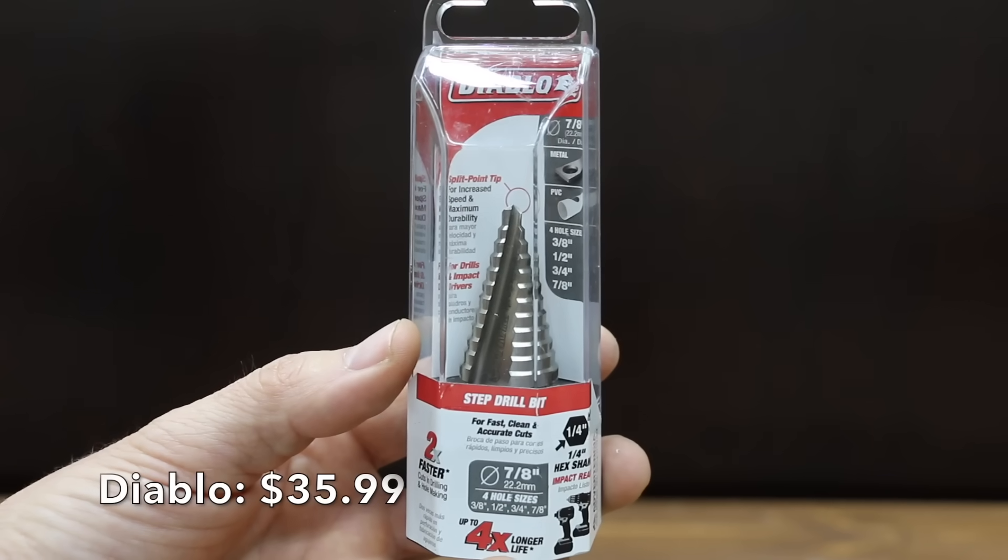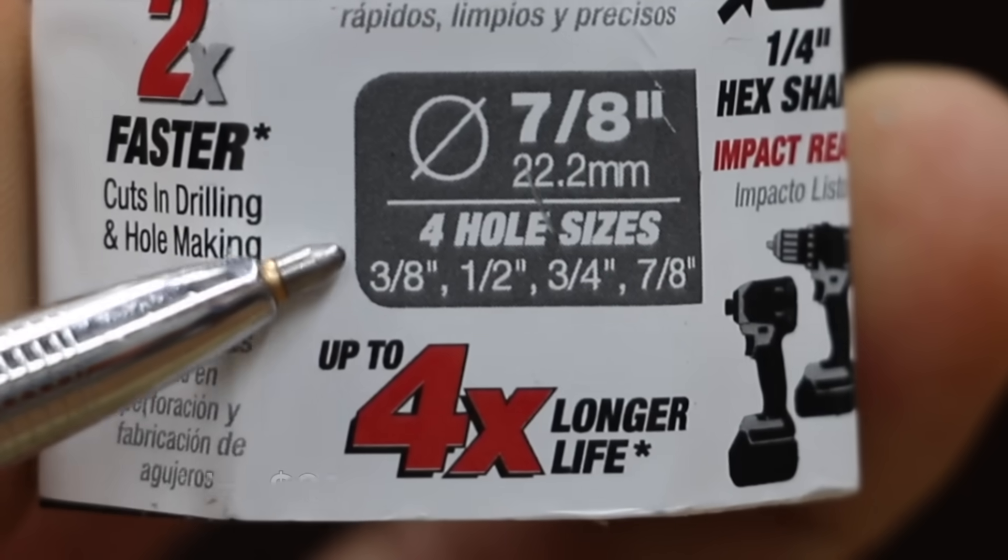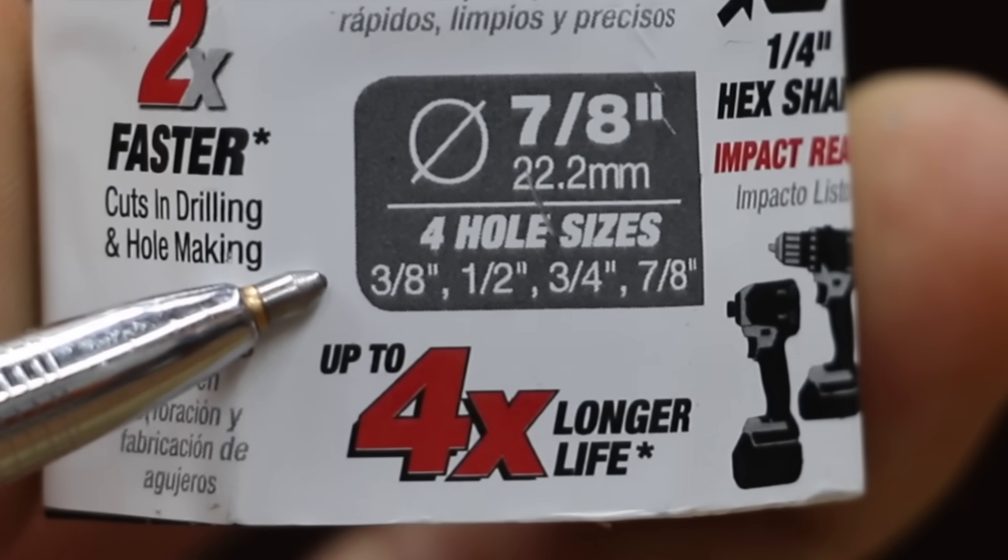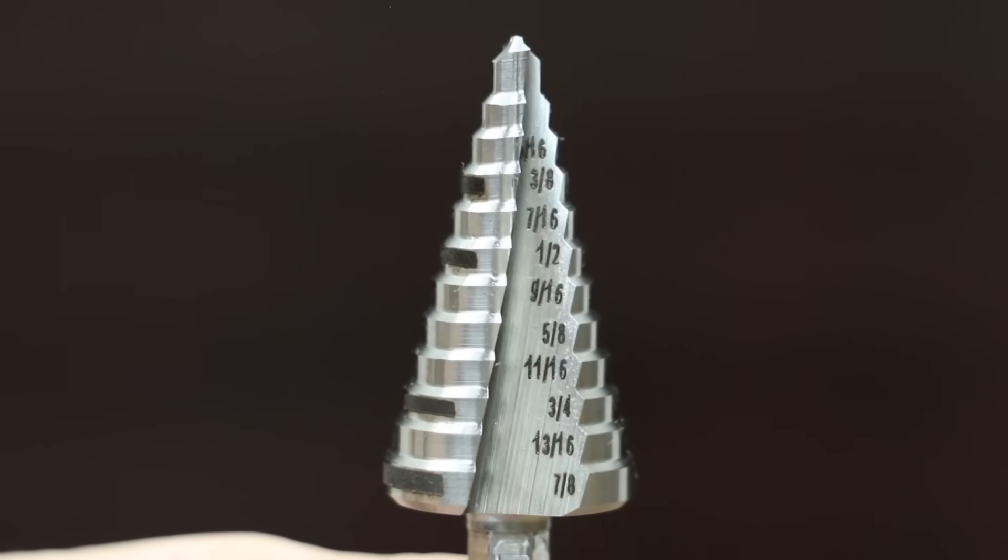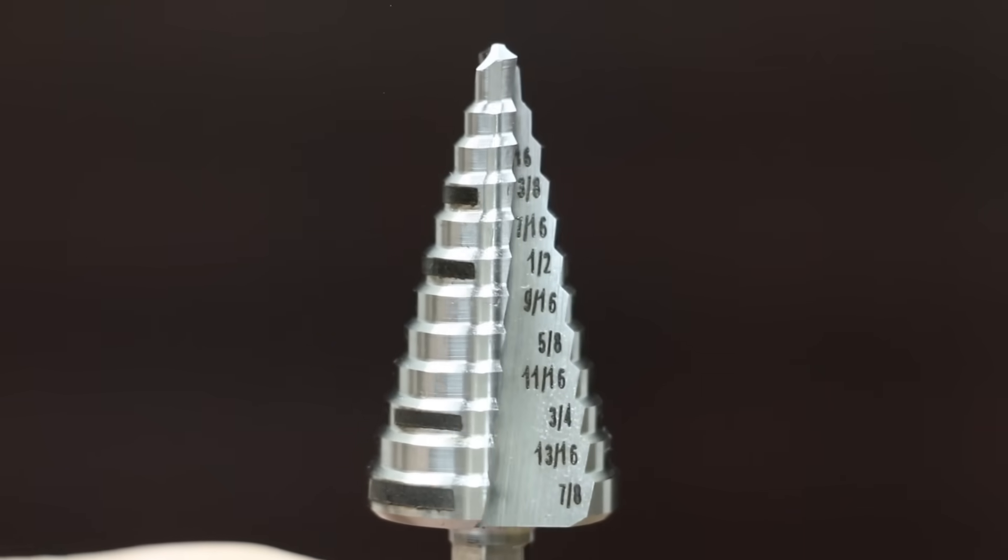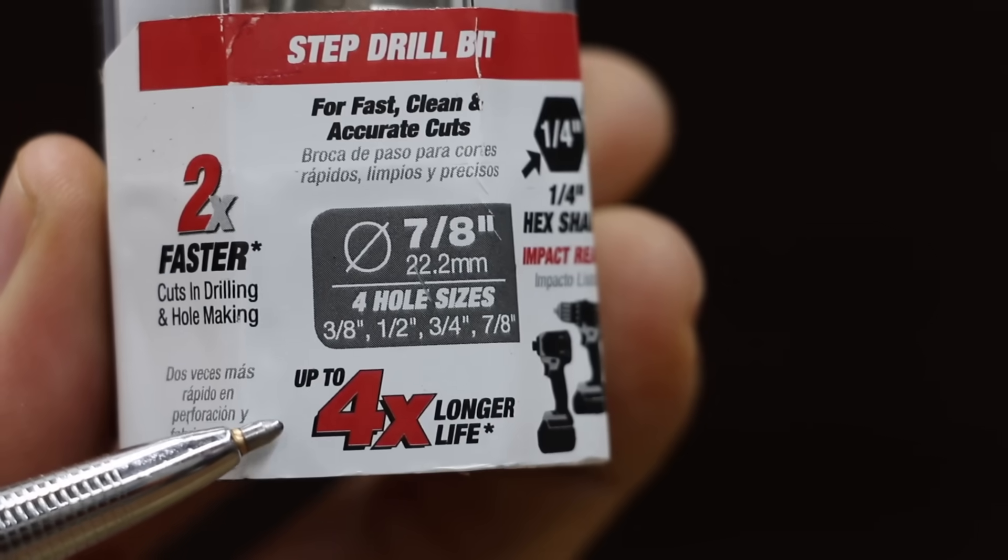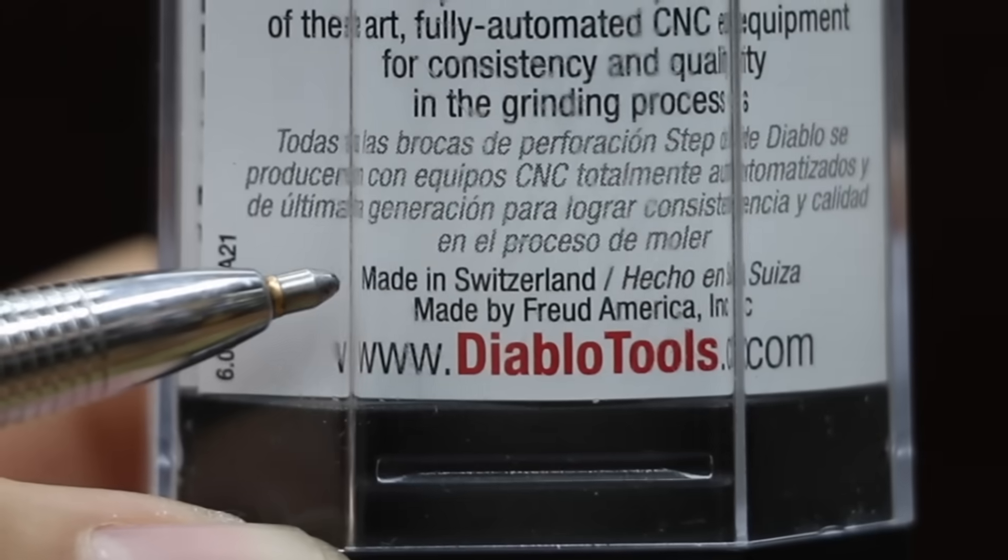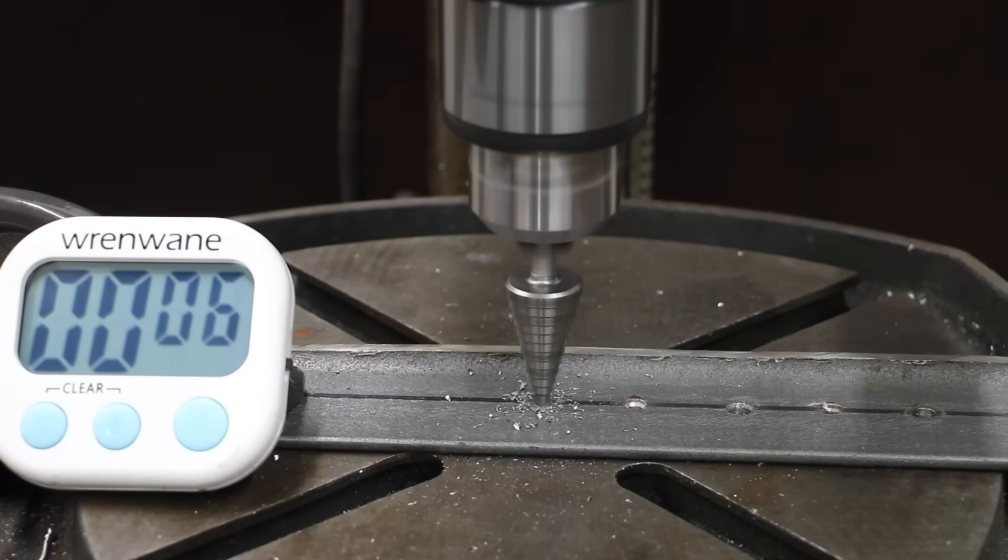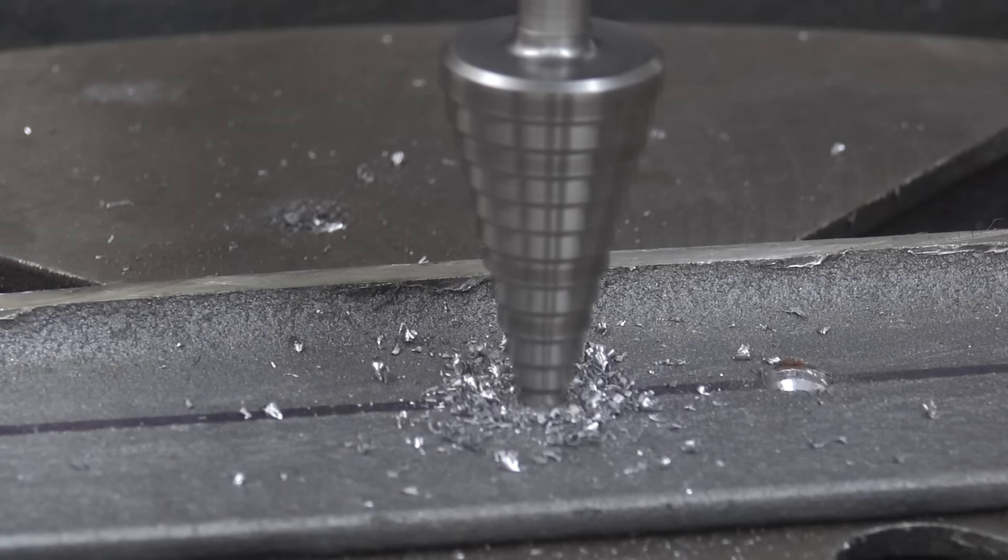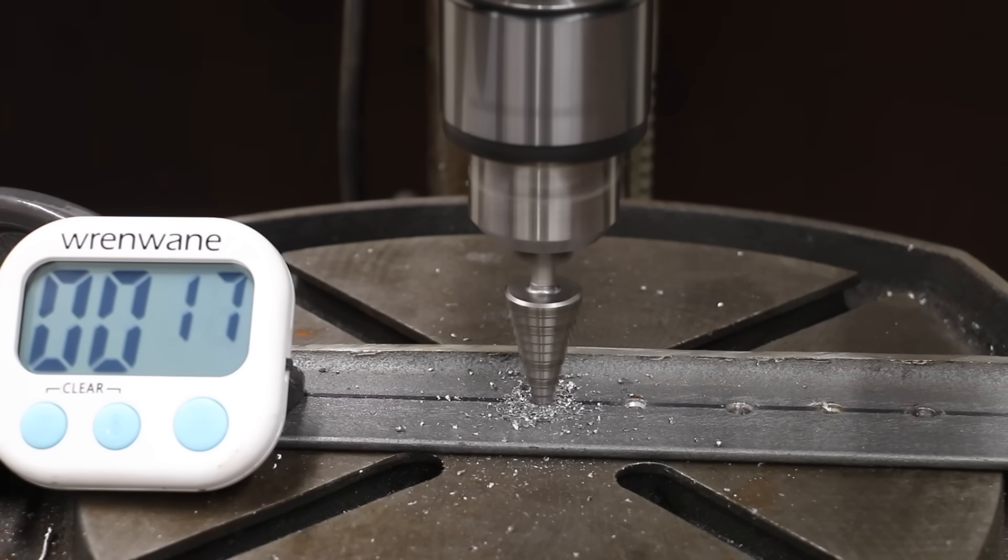The Diablo costs $35.99. Even though the Diablo has 12 steps, it only claims to make four hole sizes: three-eighths, one-half, three-quarters, and seven-eighths inch. Split point tip for maximum speed and durability, two times faster, four times longer life. Made in Switzerland. The Diablo and Bosch, both Swiss made, look nearly identical, but the Diablo wasn't quite as fast at 18 seconds. Makita holds on to the lead.